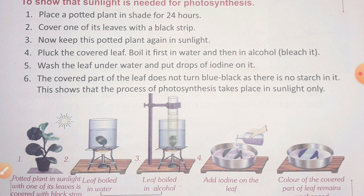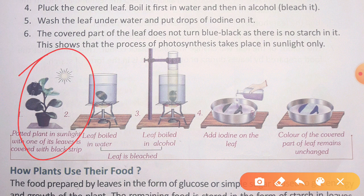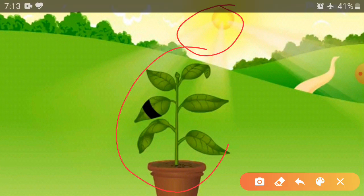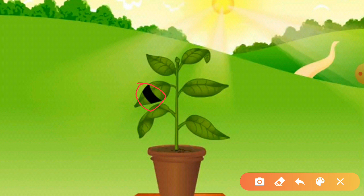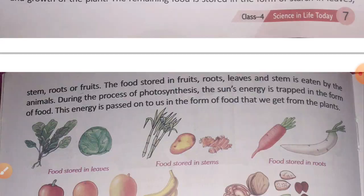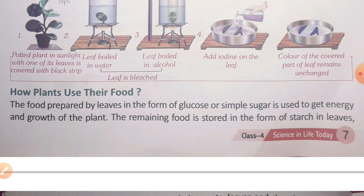Both activities are now complete. You need to make diagrams for both — color diagrams. The diagram will show the sun, the potted plant, and the covered leaf with a black strip. I will give you a picture base for the diagram. Your homework today is to write both these activities in your copy properly in pencil and make the color diagrams.